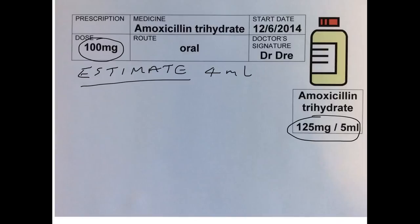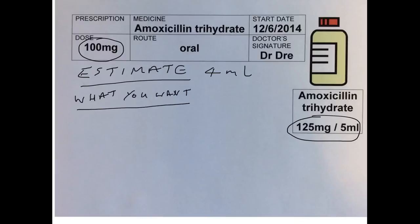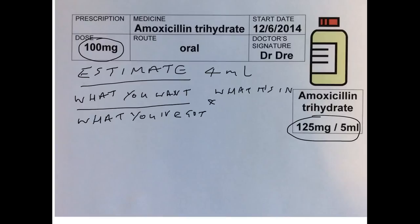So now we need to do our calculation. We use the formula: what you want over what you've got, times what it's in. What you want is 100mg, over what you've got — we're talking about 125mg per 5ml.